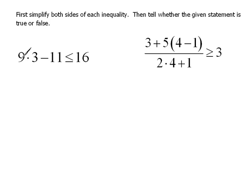Here we have a statement that says 9 times 3 minus 11 is less than or equal to 16. We don't know whether that statement is true or not until we've simplified completely and can look at a number versus a number.